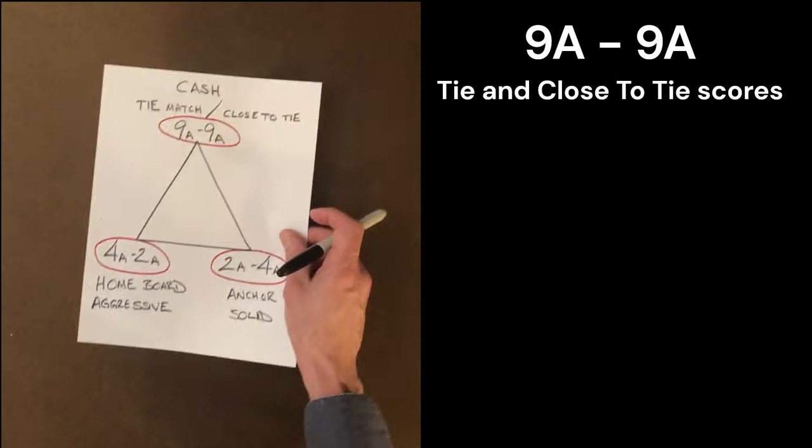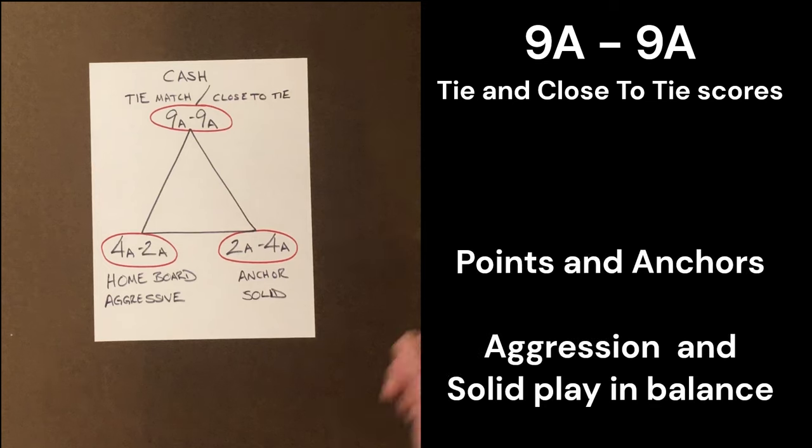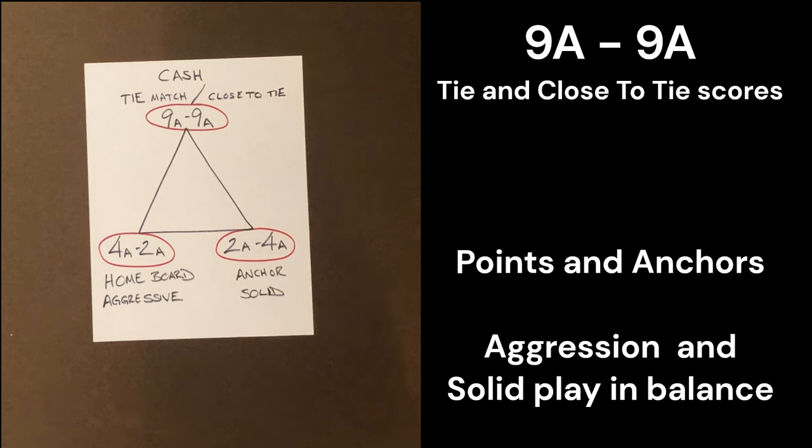So for 9 away 9 away, we'll be using basic opening theory. We're making points in our home field, points, anchors in our opponent's home field. We'll be hitting loose blots. We won't be too aggressive. We won't be too passive.